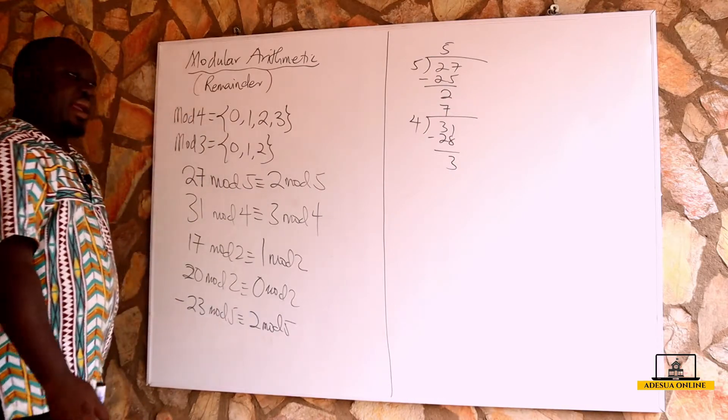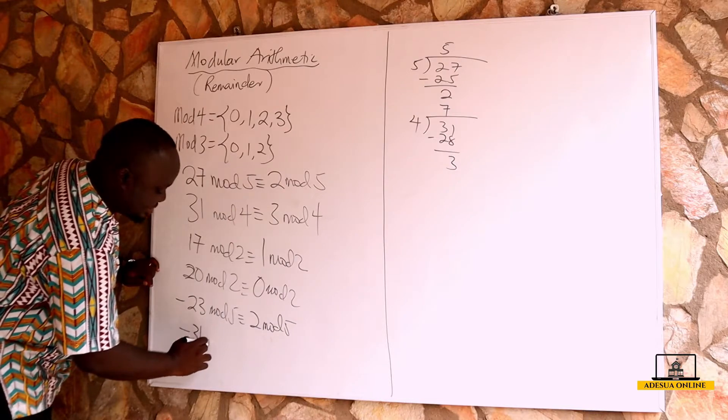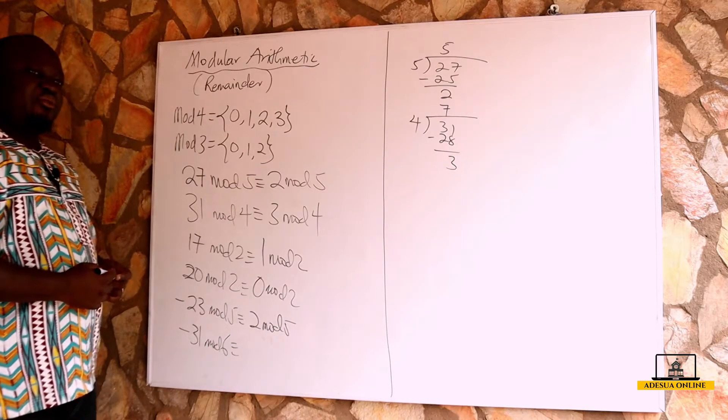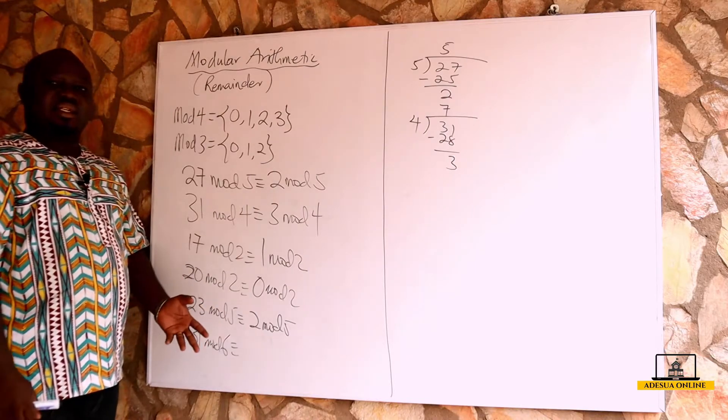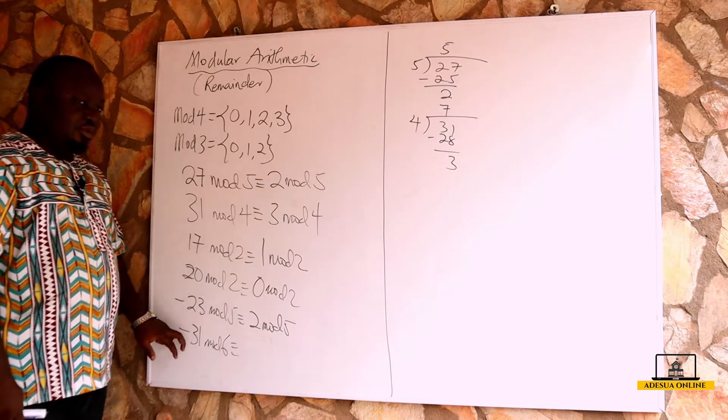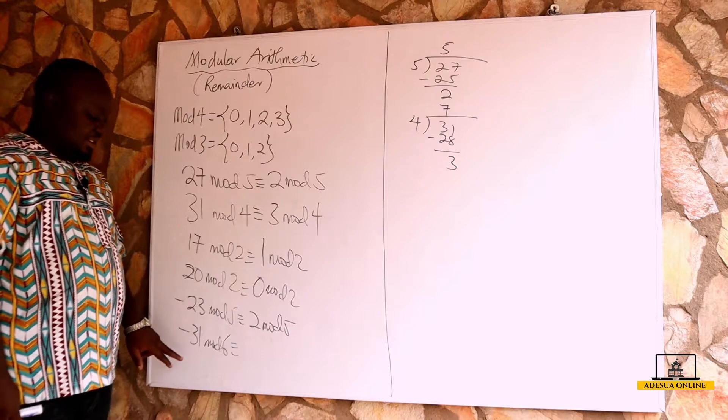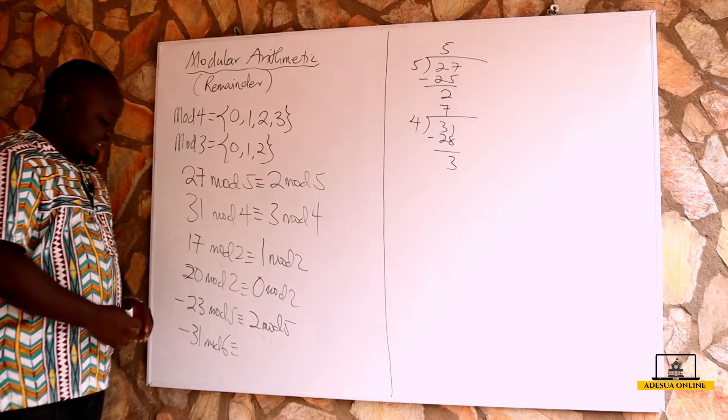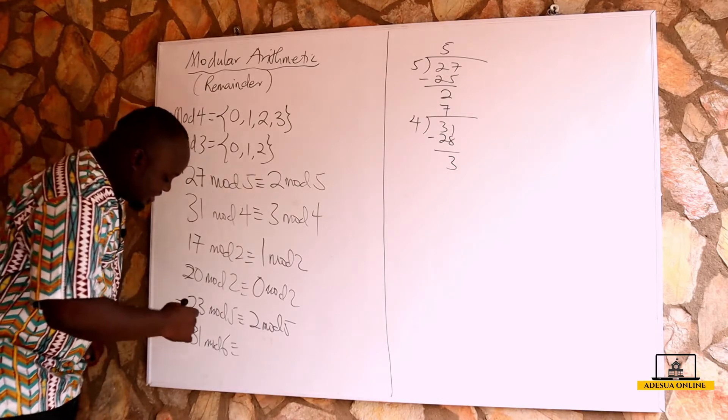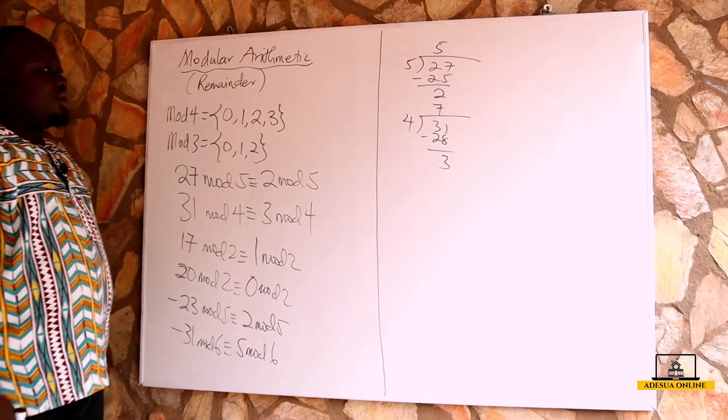If I have -31 mod 6, the same way I go for multiples of 6: 6×1=6, 6×2=12, 6×3=18, 6×4=24, 6×5=30, still less; 6×6=36. And 36 minus 31 is 5, which will give us 5 mod 6.